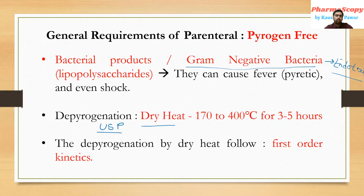This depyrogenation technique using dry heat undergoes first-order kinetics — that is additional information. The most important point in this slide is: according to USP, depyrogenation is carried out using dry heat at 170 to 400 degrees Celsius for 3 to 5 hours.